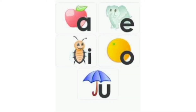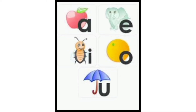I hope you all enjoyed the video. So today's topic is vowel sounds. How many vowels do we have? We have five vowels: A, E, I, O, U. These are our five vowels.